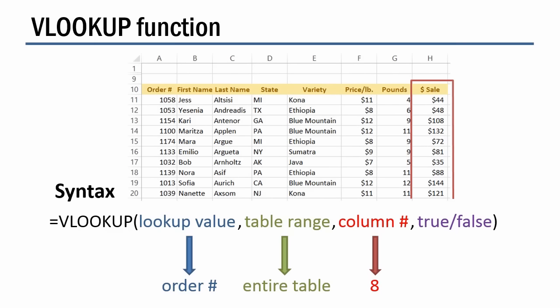The true or false argument can be a little confusing. In this instance we're going to say false. False means don't give me an approximation — give me an exact match. True means an approximation is okay. There are times when an approximation is all right, but when we're looking at order numbers and want to find the sale amount, we really don't want an approximation. Then we close the function with a matching parenthesis.